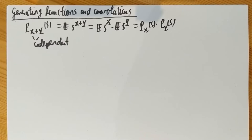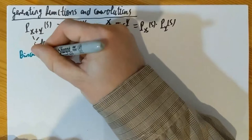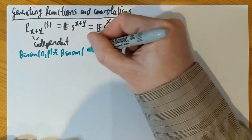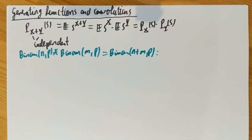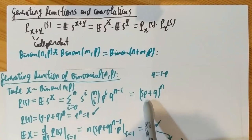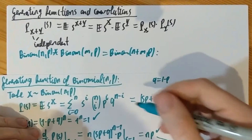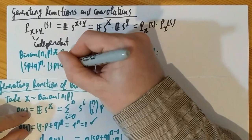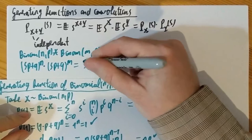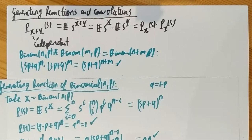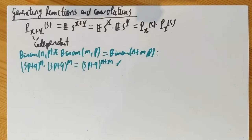Let me go through some examples. The binomial random variable Bin(n,p) convolved with Bin(m,p) is Bin(n+m,p), because if I look at its generating function from a previous video, it's (sp+q) to the n-th power. I multiply with the generating function of the other binomial, (sp+q) to the m-th power, and I get (sp+q) to the n+m power. That's a short proof of the binomial convolution using generating functions.